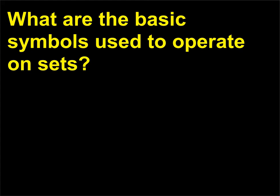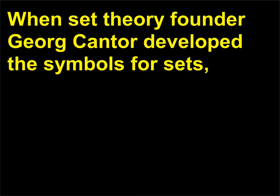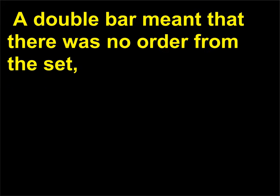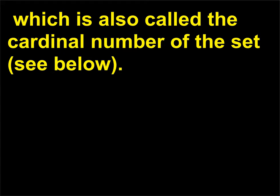What are the basic symbols used to operate on sets? When set theory founder George Cantor developed the symbols for sets, he used a single horizontal overbar to denote a set with no structure besides order, representing the order type of the set. A double bar meant that there was no order from the set, which is also called the cardinal number of the set.